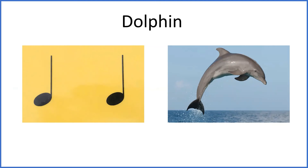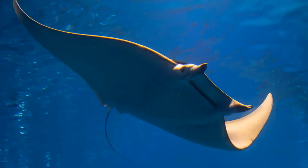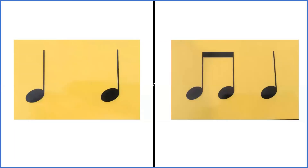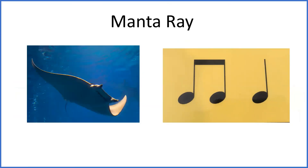Let's try one more. This is a manta ray. Manta ray. Let's clap that word. Manta ray. Which of these rhythms is manta ray? Which one sounds like manta ray? Is it this one? Or is it this one? Yes — Manta ray. We clapped three times for the word manta ray. Let's try it one more time. Manta ray. Thank you, everyone.